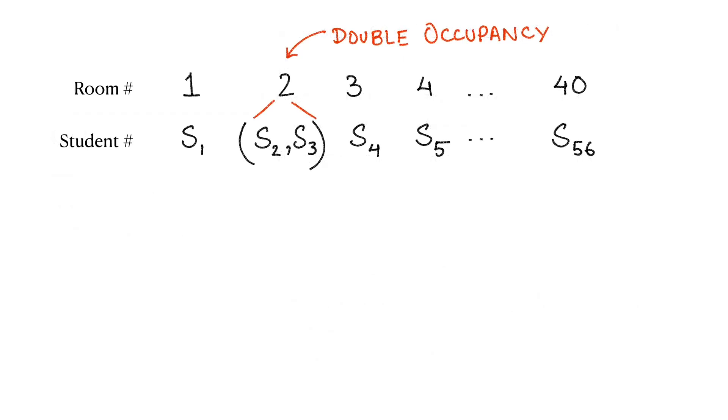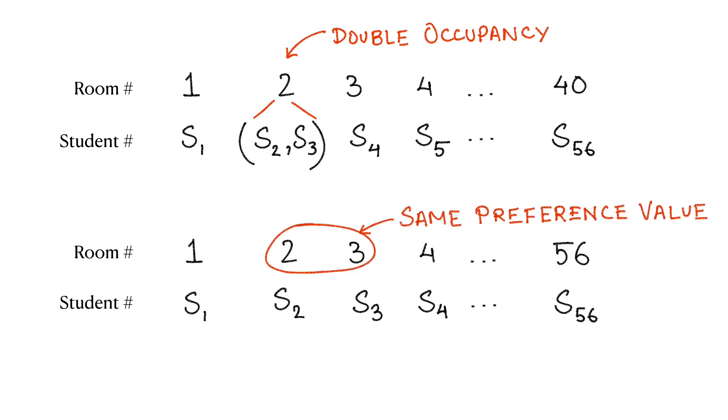We will be trying to assign unique student numbers to the 40 rooms. Since out of the 40 rooms some are double occupancy ones, two students would be assigned to the same room. For the sake of uniformity, let's break each double occupancy room into two rooms with the same preference rank across all students.